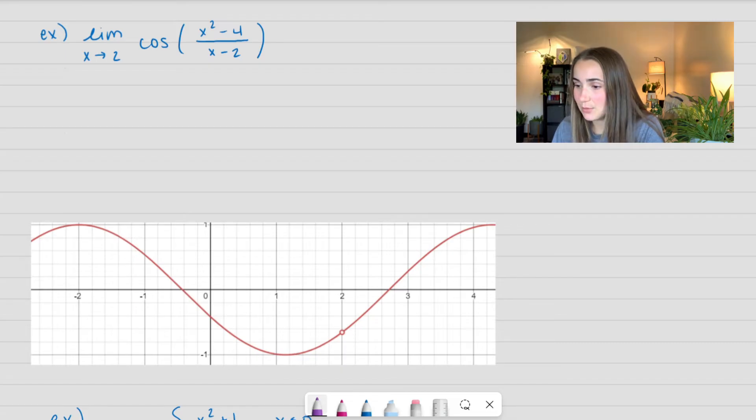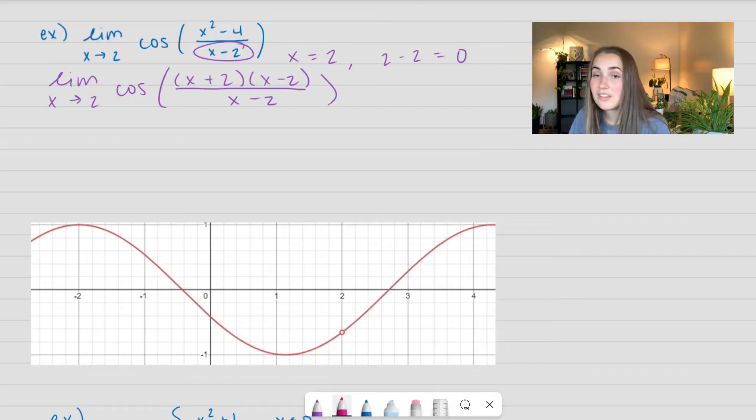First we have the limit as x approaches 2 of cosine of x squared minus 4 over x minus 2. I always suggest trying to factor if you can. We can tell our illegal value here is going to be 2 because when we plug that in, 2 minus 2 equals 0 and we cannot divide by 0. So let's go ahead and factor. So notice here my x minus 2 divide out, but that means we're going to have a hole at x is equal to 2.